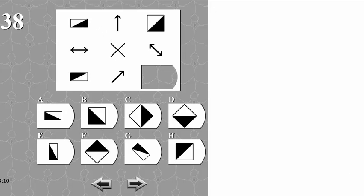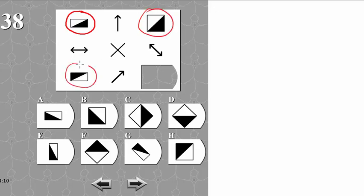This matrix is very similar to matrix 29. We have some objects and then we have some operators or functions who do some kind of action on the objects.